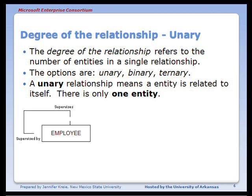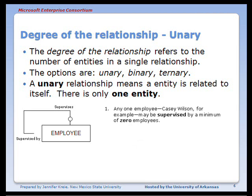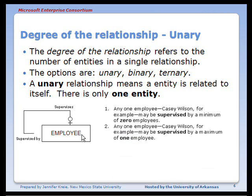An example of a unary relationship is employee related to employee. Reading one direction: any one employee — for example Casey Wilson — may be supervised by a minimum of zero employees, meaning Casey might not report to anyone and could be the CEO. Any one employee may be supervised by a maximum of one employee, so Casey may have people above her in the organizational chart, but she reports to one and only one person.